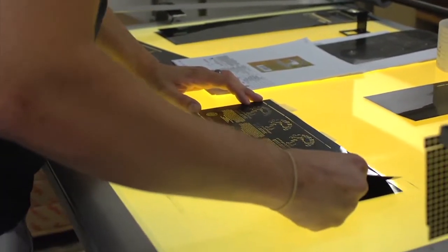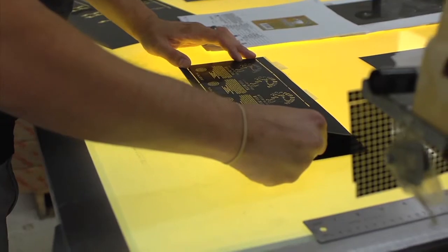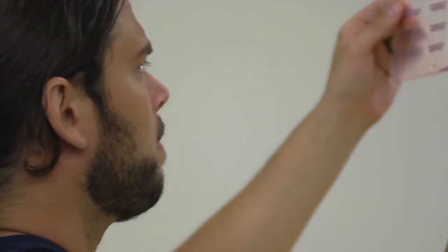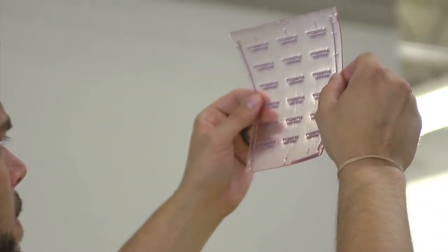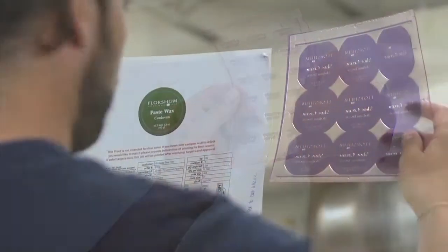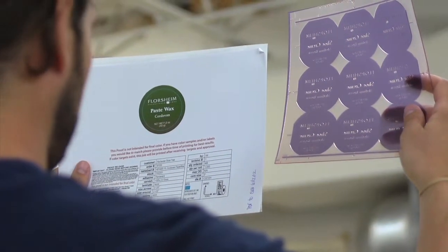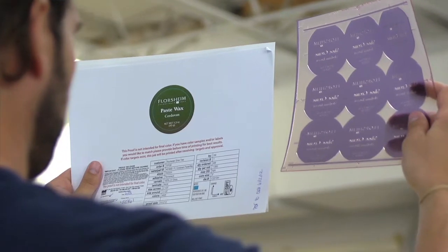The order goes to pre-press, where films are made for each color you are using. From the film, we create rubber plates, which will pick up each color and place it on the paper, film, or vinyl material your labels are created from. Each color needs its own plate.